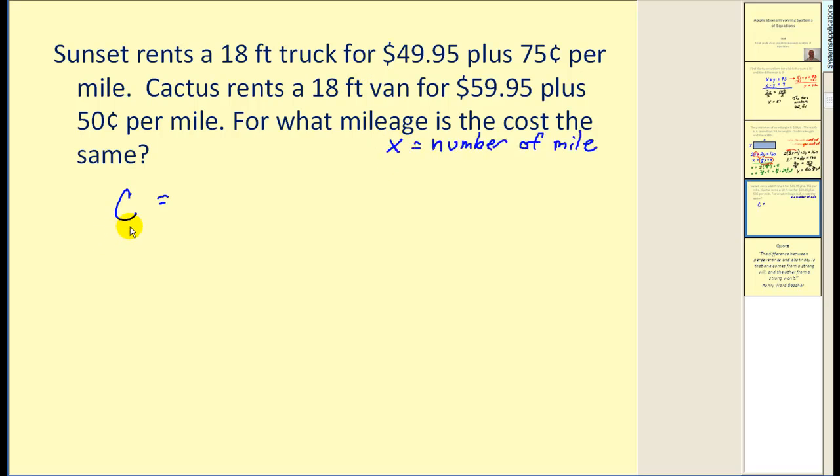So if we let x equal the number of miles, the total cost for the Sunset truck would be, now we need to be a little bit careful here, this is in cents and this is in dollars. So we're going to convert 75 cents into dollars, so 0.75 times the number of miles plus the fixed cost of 49.95. Now if we go with the 18-foot van from Cactus, the cost is going to equal 50 cents per mile, so 0.50 times x plus the fixed cost of 59.95. So there's our system of equations.